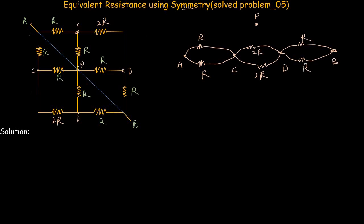Between point C and P we have two resistors of value R each. Between point D and P we also have resistors of value R each. This completes the simplified version of the problem, and we can now simplify the network using the rules of series and parallel circuits.